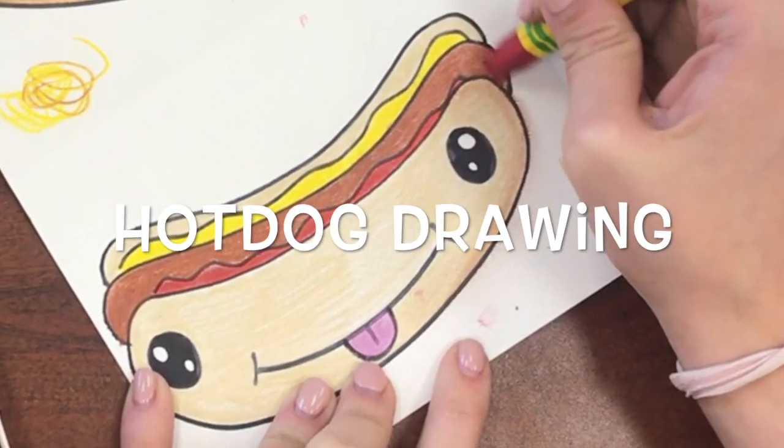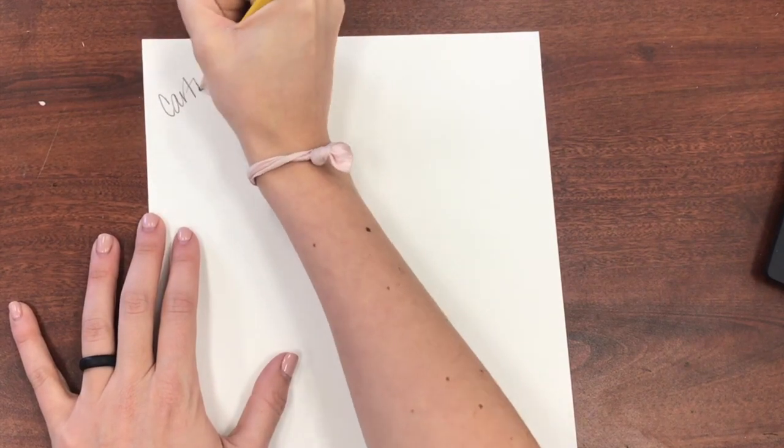Hi friends! We're going to be learning how to draw a hot dog. You need a pencil and you're going to write your name and class code on the back.